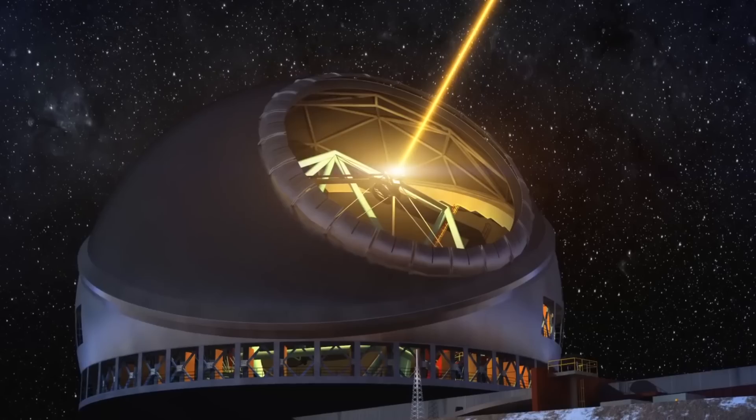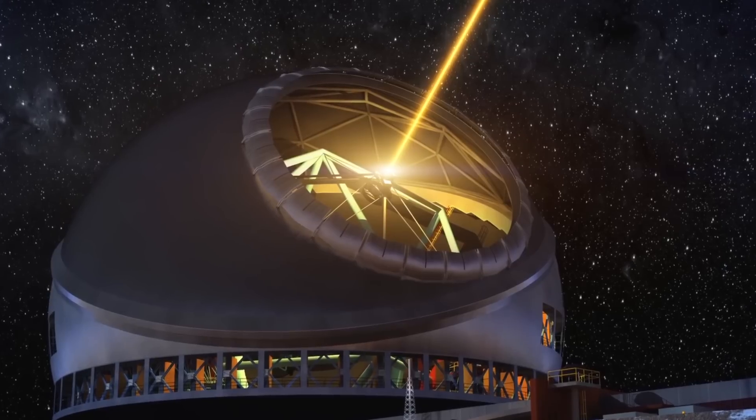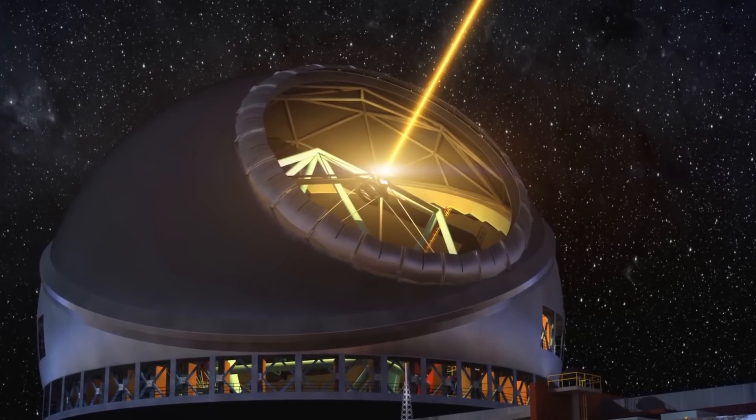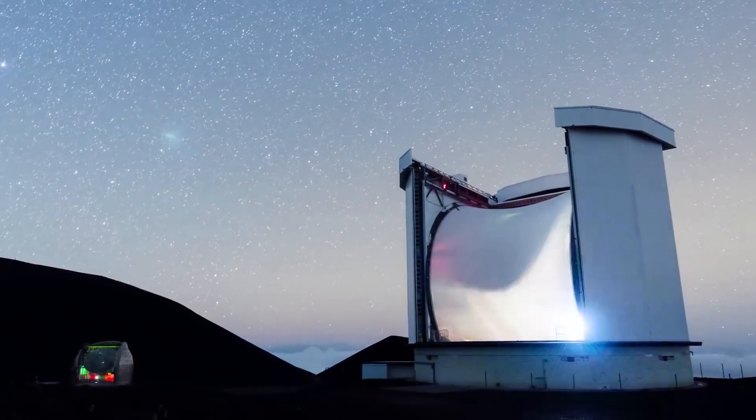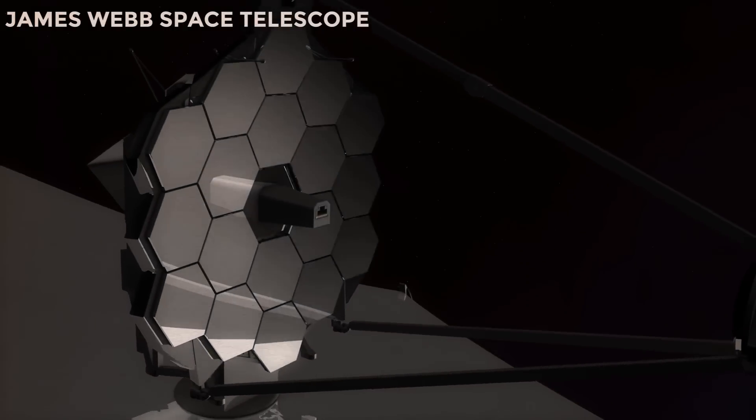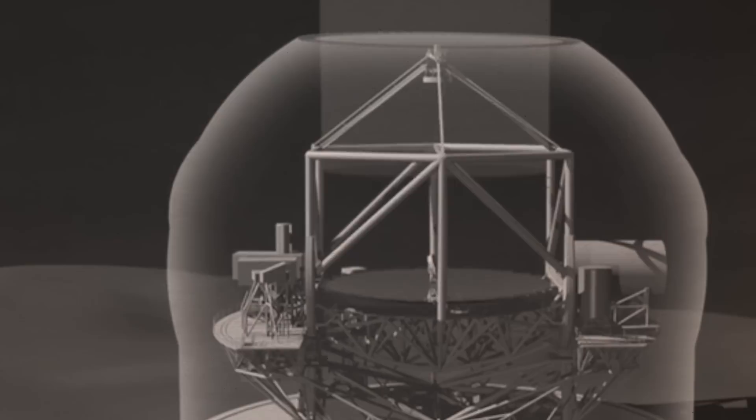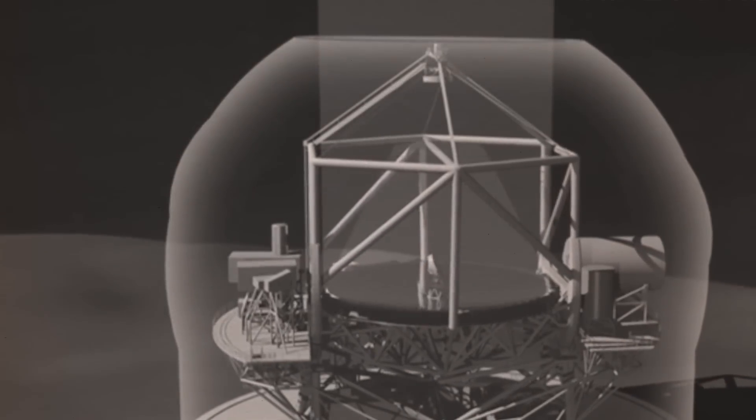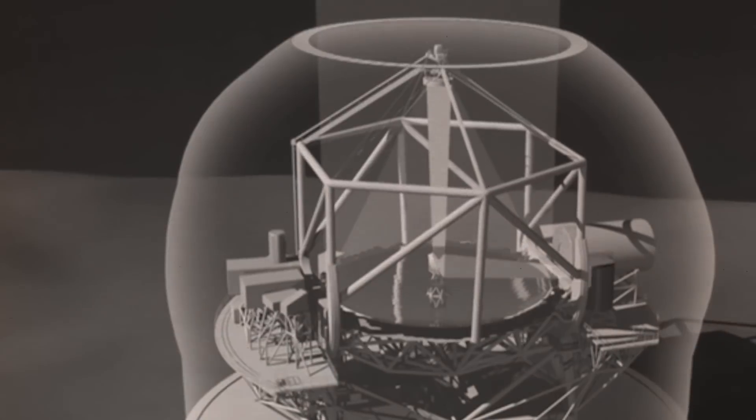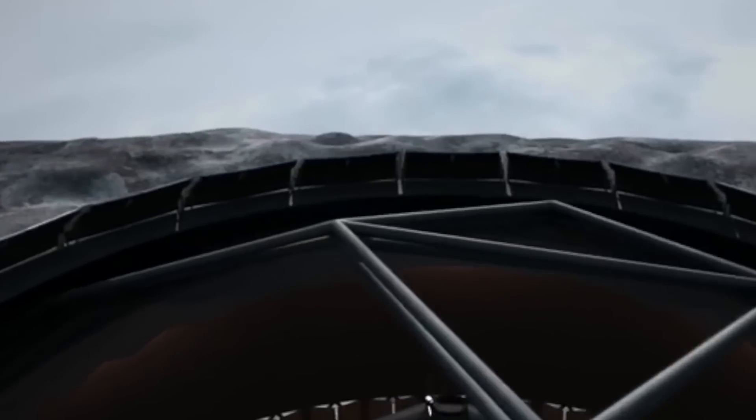This telescope is unlike anything we've ever seen before. TMT will be three times the size of the world's largest visible light telescope with nine times the area. This larger telescope will produce crisper and more detailed images than current ground-based and space-based telescopes. But it is only by using advanced adaptive optics to rectify the blurring effects of the Earth's atmosphere that we can achieve these advancements.